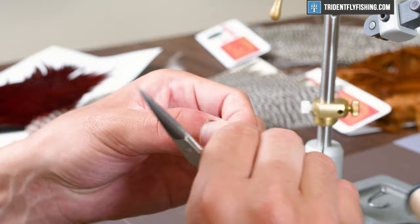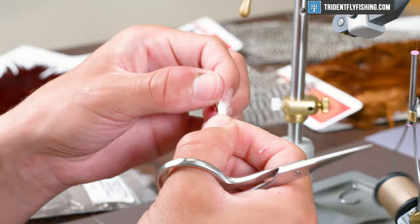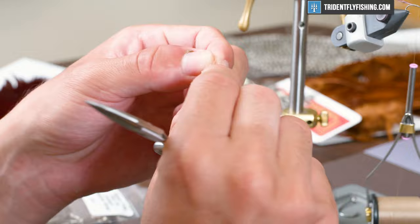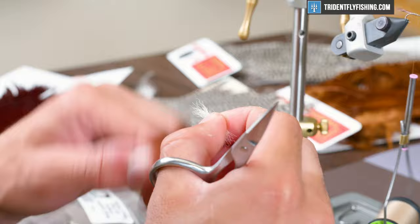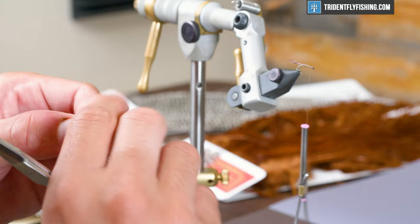So clipped our calf tail. We have probably about a quarter width of a pencil. I'm just getting the shorts out right now. They don't really contribute to anything with this fly. Sometimes it comes right off the tail and it's a nice, even tipped bunch, but this doesn't happen to work like that. So we're going to stick it in the hair stacker.